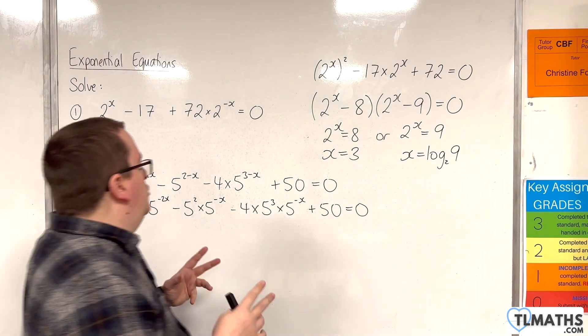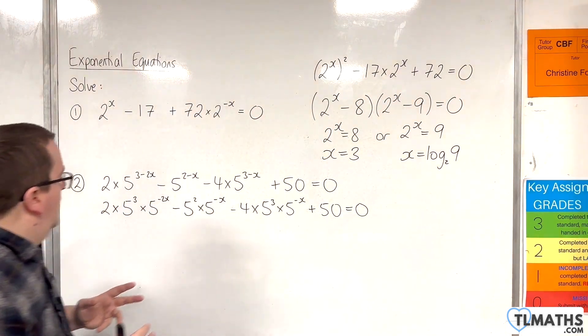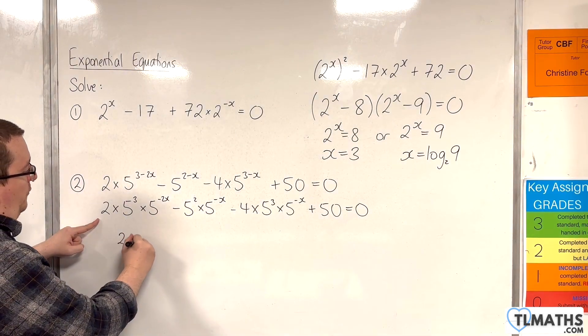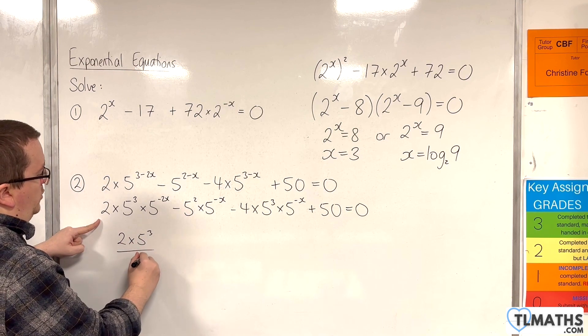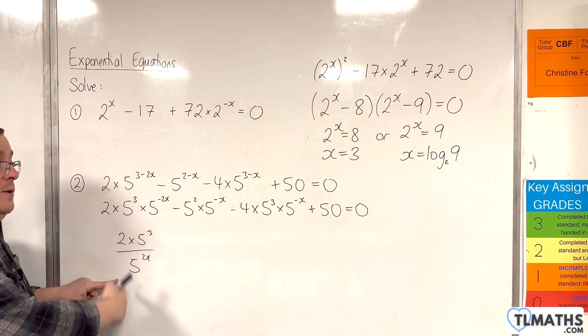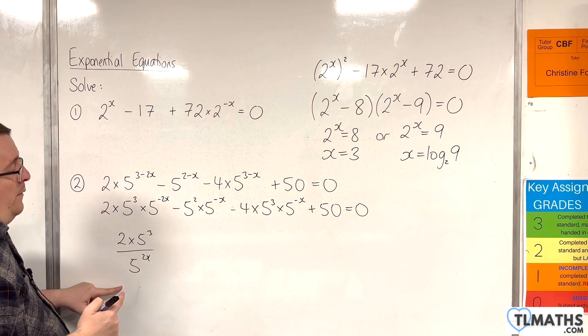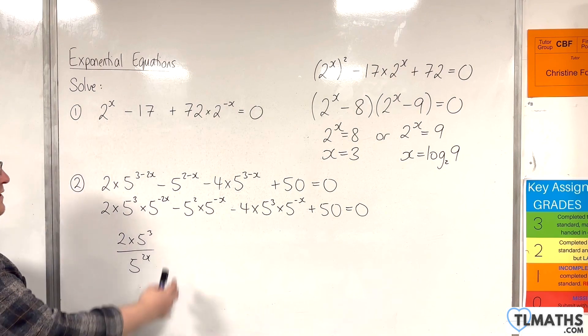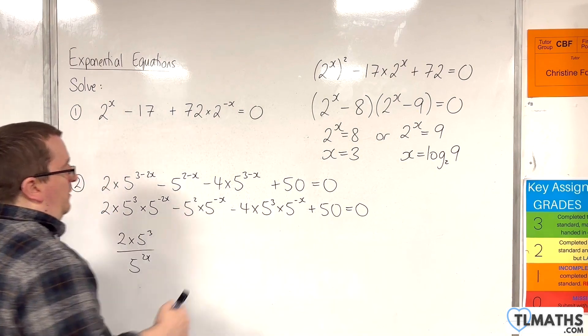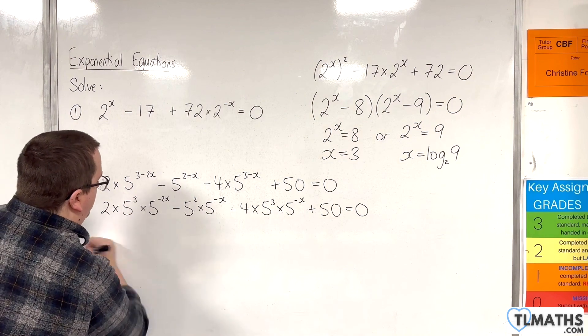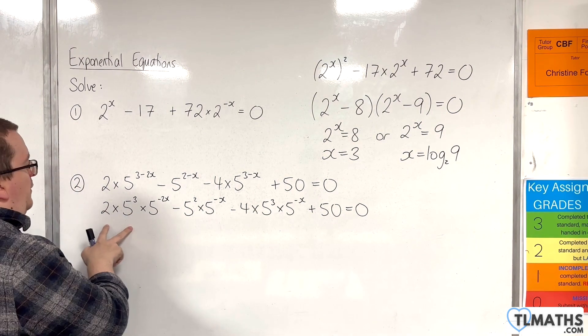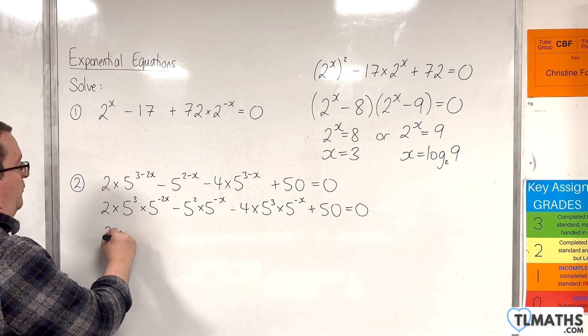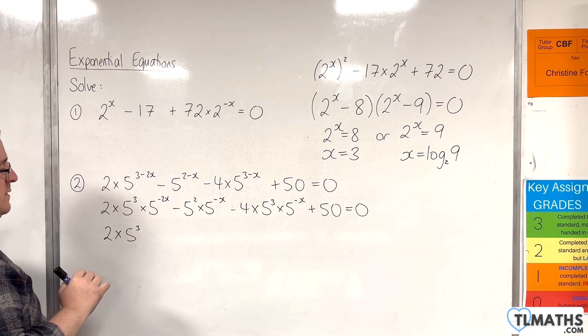Now, just to make sure you're happy with this. The reason why is because that term is 2·5³ over 5^(2x). So, I have a 5^(2x) in the denominator. That's what that minus in the power means. So, multiplying through by 5^(2x) will bring it out of the denominator and multiply with each of these terms and simplify them. OK? So, that's my method. So, if I multiply this term by 5^(2x), I'm just going to get the 2·5³. OK? I'm just going to leave that as it is at the moment.